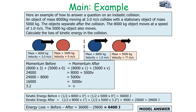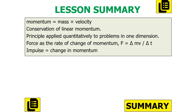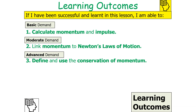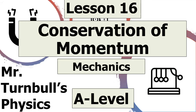In today's lesson we learned that momentum is mass times velocity, that there is the conservation of linear momentum, and that impulse is the change in momentum. We should now be able to calculate momentum and impulse, link momentum to Newton's laws of motion, and define and use the conservation of momentum. Thank you very much for watching this lesson on the conservation of momentum, part of the mechanics topic in AQA A-level physics. Have a lovely day.